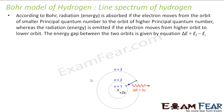According to Bohr, energy is absorbed if an electron moves from an orbit of smaller quantum number to a higher quantum number — for example, from here it moves up to here. In this case, energy is absorbed.